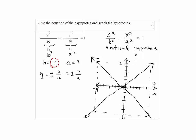Now the b is 7, so we go up by 7 and go down by 7, and then we know our graph will be a vertical hyperbola. So it's going to be the two arcs that go up and down.